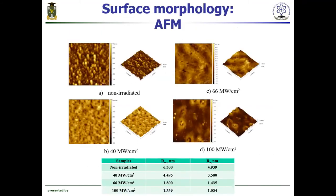Atomic force microscopy 2D and 3D scans for all the titanium dioxide zinc films show that the non-irradiated zinc films have the highest roughness of 6.3 nanometers in comparison to the laser-irradiated films. At 100 megawatt laser intensity, the titanium dioxide films present the lowest roughness of 1.3 nanometers. This exceedingly low value indicates a very smooth surface of the titanium dioxide films. By increasing the laser intensity, the films demonstrate a compact and well-adhesive nature on the glass substrate.